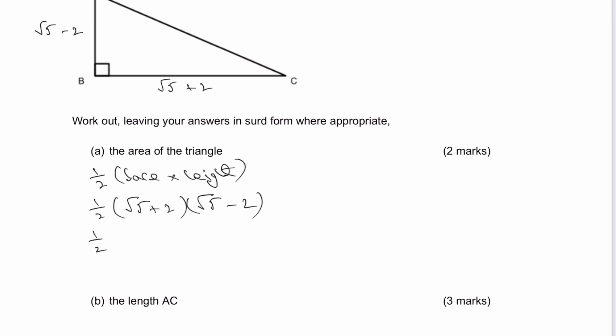And then it's really a case of expanding those double brackets and then working everything out. So I've got a half, and I've got root five times root five is going to be root 25, and the square root of 25 is five. And then I've got root five times minus two is minus two root five. But then I've also got plus two root five. So actually, I end up with those two cancelling themselves out. Minus two root five plus two root five is zero.